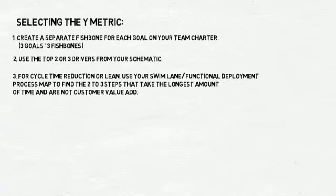Option 3: If you have a cycle time reduction project, or a lean project, you may want to look at your swim lane functional deployment process map and find the two to three steps that are taking the longest amount of time and are not customer value add. Then, you can create a fishbone diagram for each of these tasks, asking, for instance, why does the request for proposal step take so long?